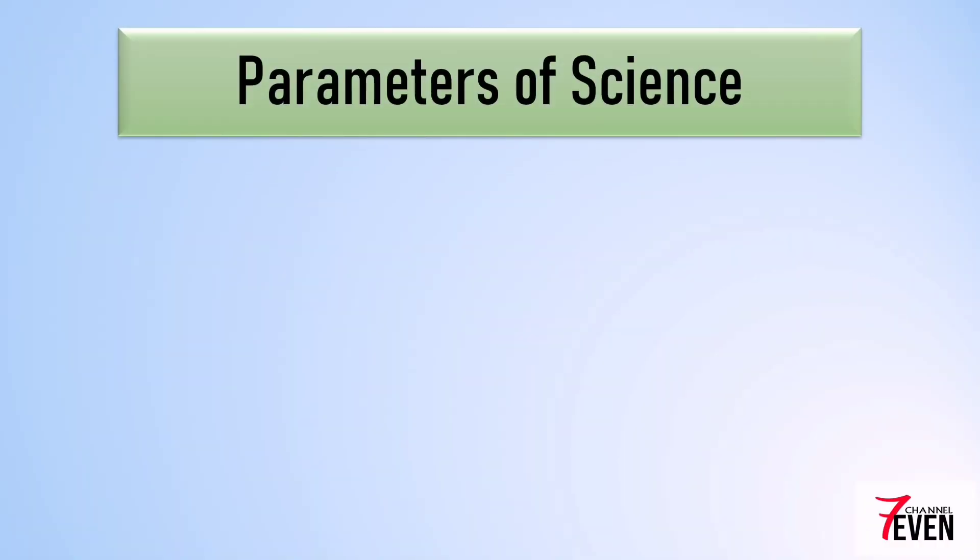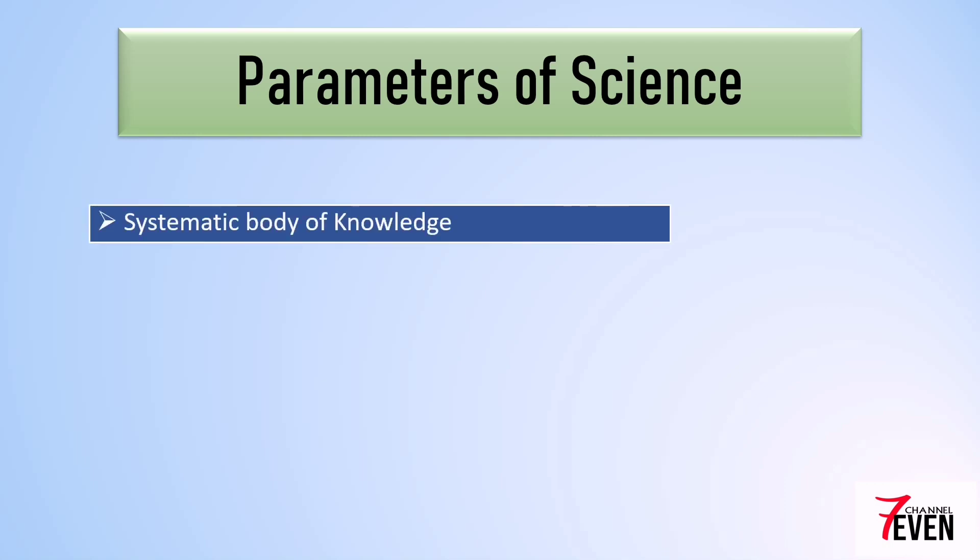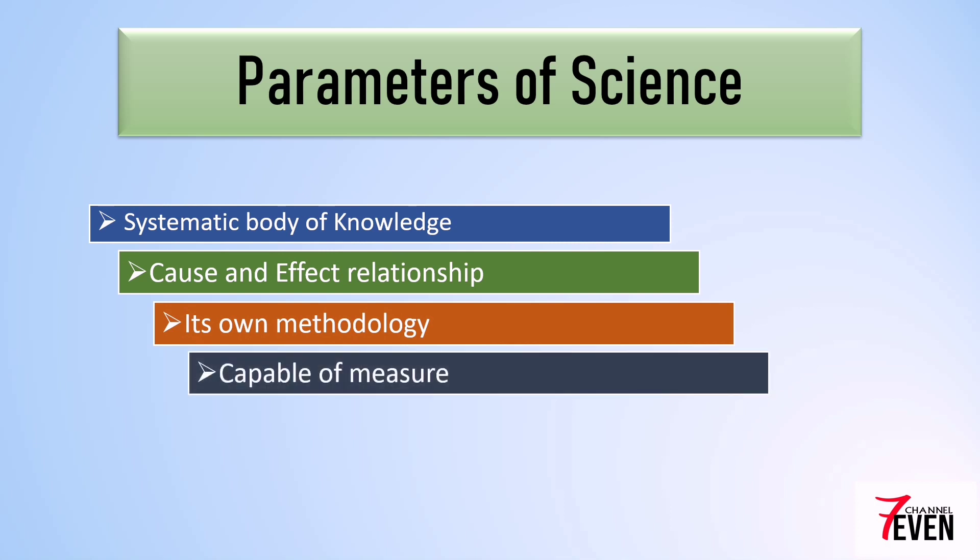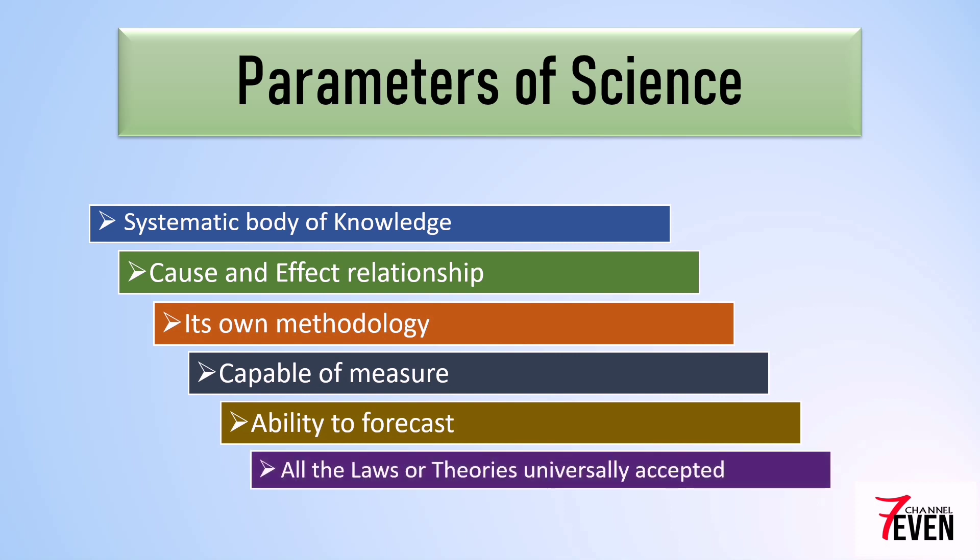What are the parameters of science? There are a few. First, systematic body of knowledge. Second, cause and effect relationship. Third, its own methodology. Fourth, capable of measurement. Fifth, ability to forecast. Sixth, all the laws and theories are universally accepted.